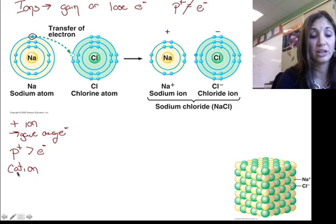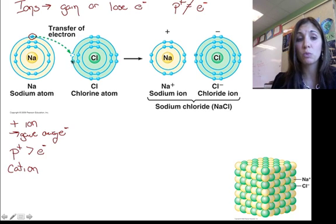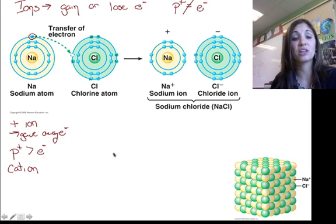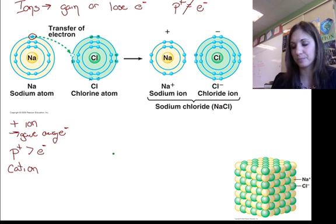Now, chlorine, on the other hand, chlorine's a bit of a bully. Chlorine has one, two, three, four, five, six, seven valence electrons. So what's it easier to do? To gain an electron, one, or to lose seven? It's easier to gain that one electron. So it's going to steal an electron from another atom. So it's going to become a negative ion because it stole electrons.